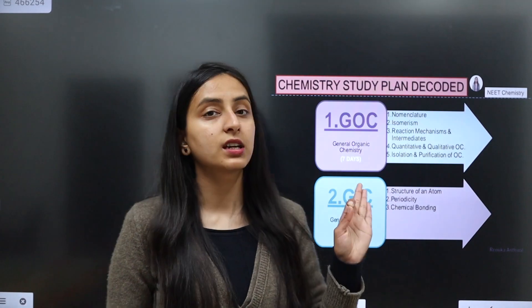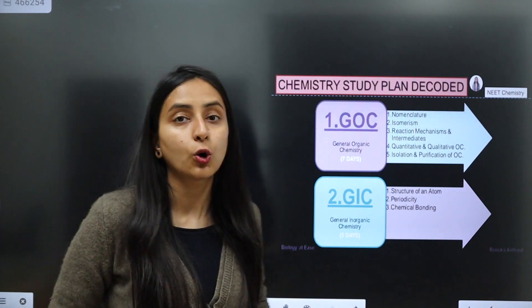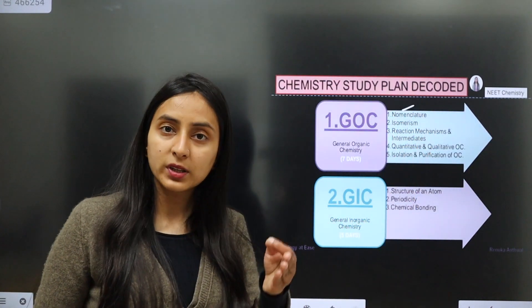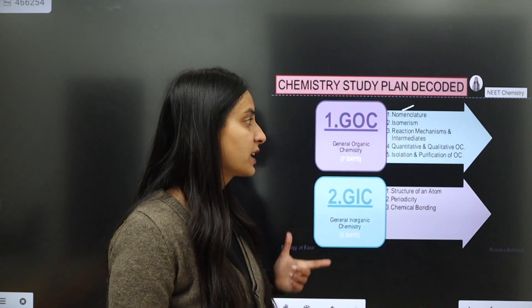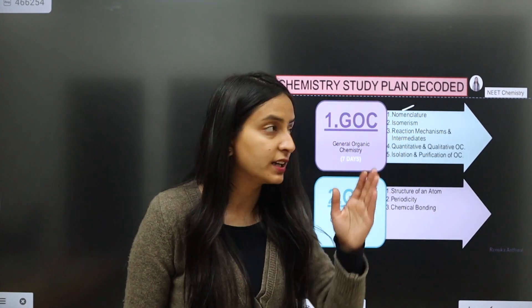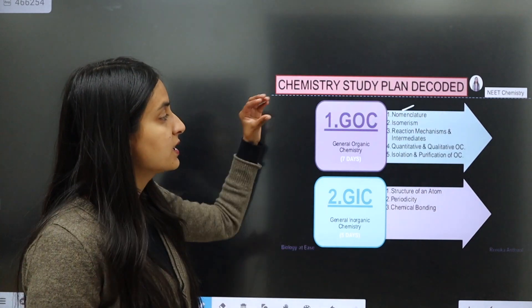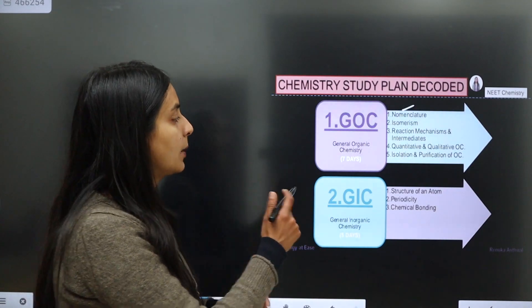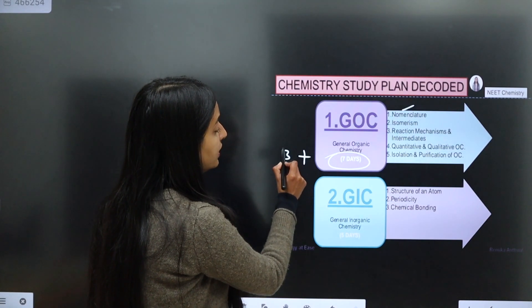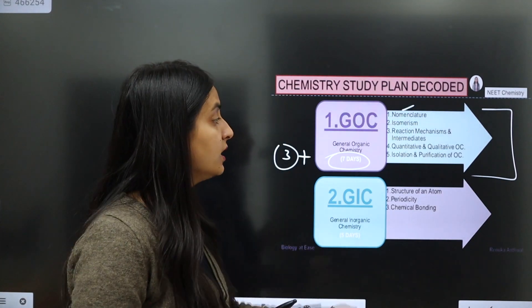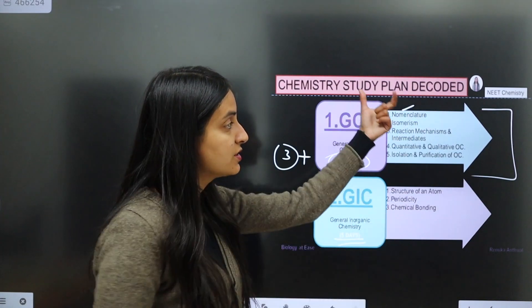I have divided 8 groups. The first group is General Organic Chemistry. When you start studying, you will study in this sequence: first isomerism, then reaction mechanism and intermediates, then quantitative and qualitative organic compound analysis, then isolation and purification of organic compounds. To understand general organic chemistry concepts, you can take 7 days. If you are following this strategy, you can take a bonus of plus 3 days, completing this section in 10 days.